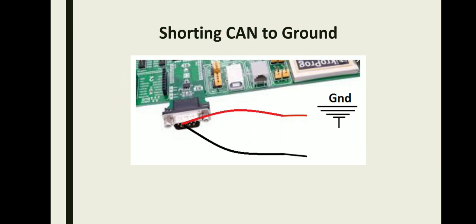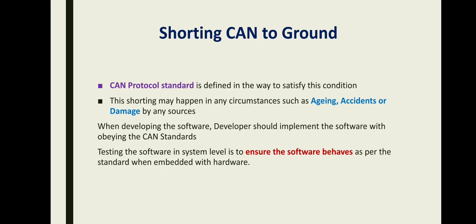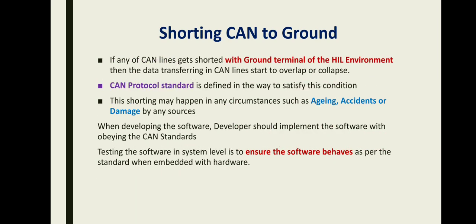The third shorting condition is shorting the CAN line to the ground. If you short the CAN line to ground, it will also cause bus off. These are all three conditions — shorting CAN high to CAN low, shorting to battery, and shorting to ground — that will make the CAN communication go bus off.